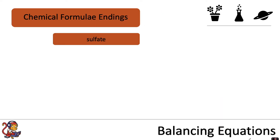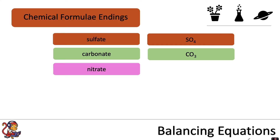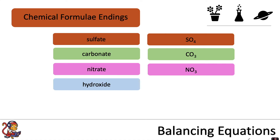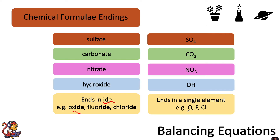Here are some common endings for chemical formulae. If your compound ends in 'sulfate', the ending is SO₄. If it ends in 'carbonate', the ending is CO₃. Nitrates end in NO₃. Hydroxides end in OH. And if your word ends in '-ide', like ours does — for example oxide, fluoride, or chloride — the ending is a single element: O for oxide, F for fluoride, or Cl for chloride. You may want to pause and make a note of those.